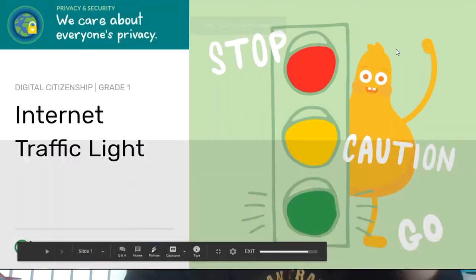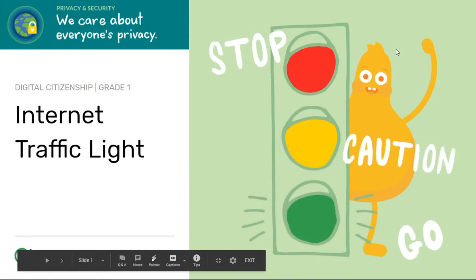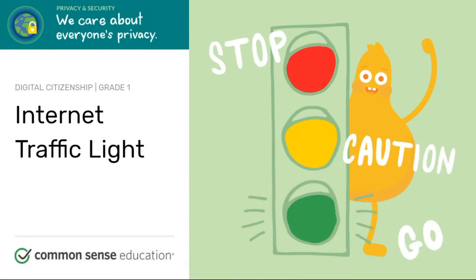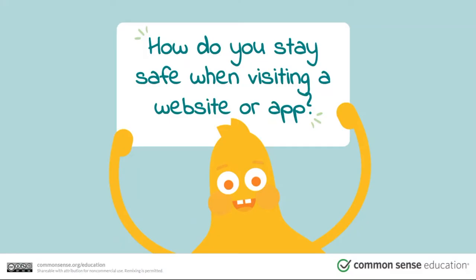Here we are with our next lesson on internet safety and being a good digital citizen. Today we're going to take a look at the internet traffic light. It has a red, a yellow, and a green light — much like you see when you're out driving in the car. We want to ask ourselves: how do you stay safe when visiting a website or an app?